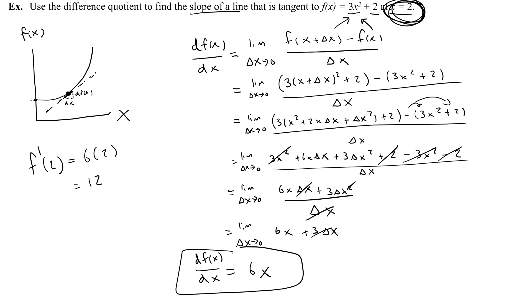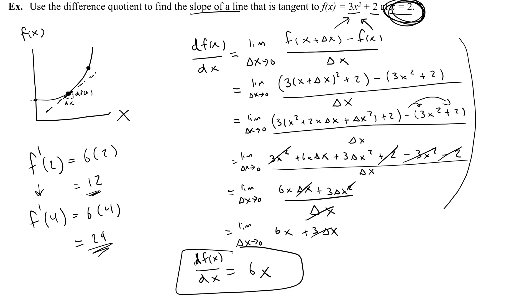What if I want to find the slope at x equals 4? Using the derivative again — f prime of 4 equals 6 times 4, which is 24. So the slope at that point is 24. This is a much quicker and more exact way of finding the slope of a tangent line at a point on a curving function than trying to draw the tangent by hand.